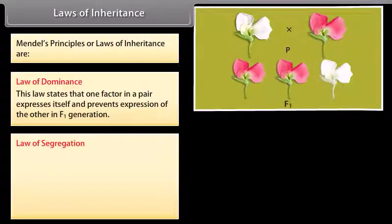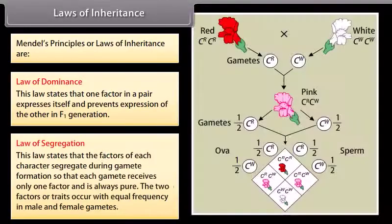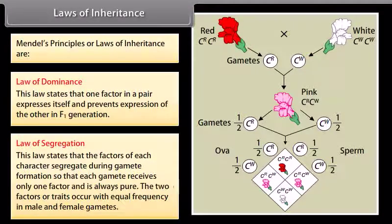Law of segregation. This law states that the factors of each character segregate during gamete formation so that each gamete receives only one factor and is always pure. The two factors and traits occur with equal frequency in male and female gametes.